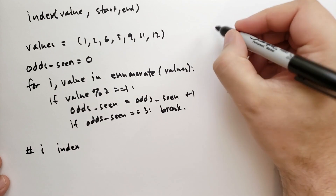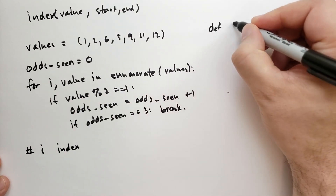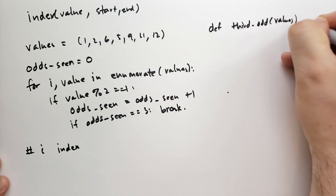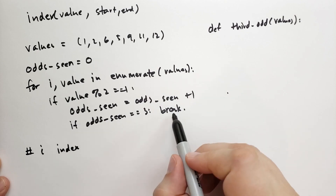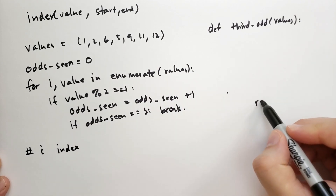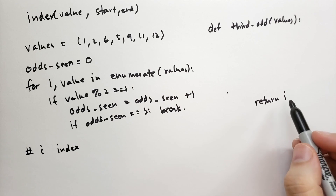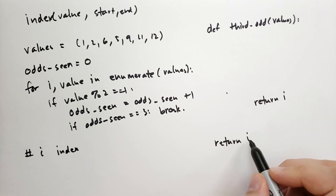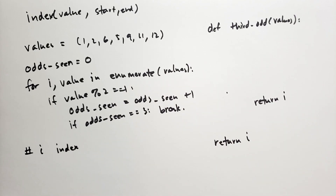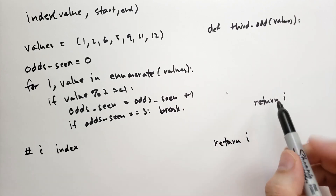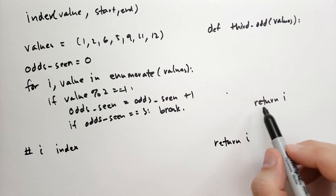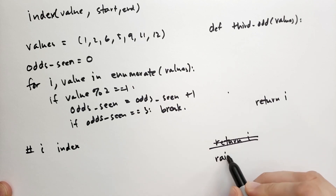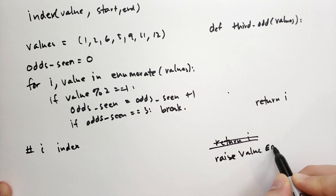We can turn this into a function — let's call it def third_odd. Using the same code, instead of breaking out we could return the index, or move the return to the very end. We'd have to be careful if no items match that value, so perhaps we return from inside the for loop when found, and if we don't return by the end, raise a ValueError saying that item doesn't exist.